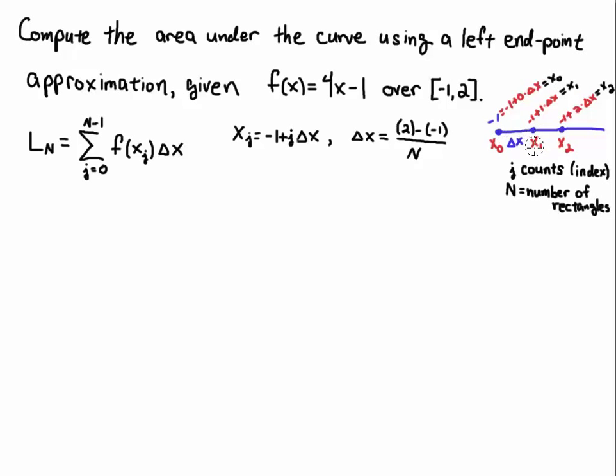Then to get to the next grid point, you add delta x, so that'll be minus 1 plus 1 times delta x, and that'll give us x sub 1. And then to get to the next grid point, you add 2 delta x's, because that's going to be 2 away. So it'll be minus 1 plus 2 times delta x equals x2. And then for 3, it'll be minus 3 plus 3 delta x, and so on. So j is counting the number of rectangles or the number of grid points here.